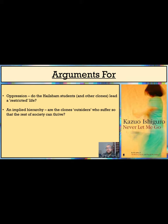It is clear then that Kathy, Ruth, Tommy and the rest of their fellow clones are outsiders, and it seems like they are the group that are made to suffer for the benefit of the rest of society.